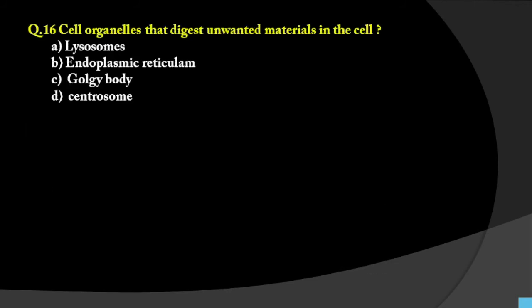Question number 16: Cell organelle that digests unwanted material in the cell. Which organelle digests debris or unwanted material? Options are lysosome, endoplasmic reticulum, Golgi body, or centrosome. The correct answer is lysosome, because lysosomes use their enzymes to digest unwanted material inside the cell. The enzymes present in lysosomes perform this digestion.